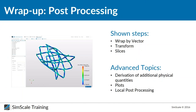I showed you how to use the warp-by-vector filter, how to change time steps, and how to use the transform filter and slices to get insights into the stent. There are some additional things like derivation of extra physical quantities using the calculation filter, or creating plots and diagrams — but those require local post-processing. What you have learned so far is enough to create your own simulations and perform post-processing, and if you have questions you can use our forum.